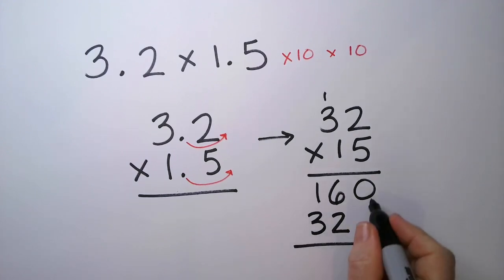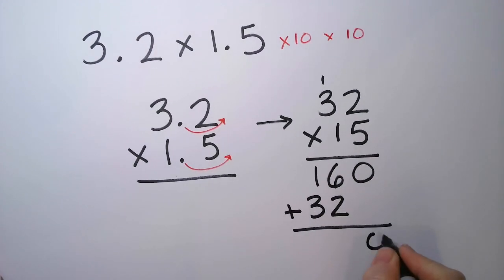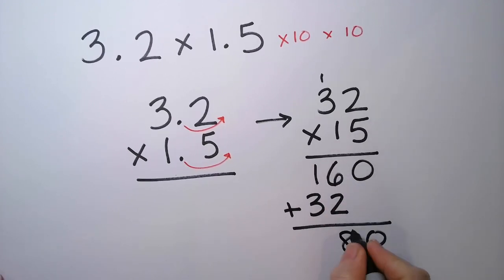And then we're going to add these numbers together. So I'm going to have a 0, and this is an 8, and this is a 4.